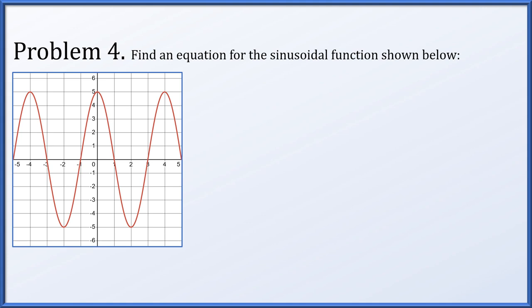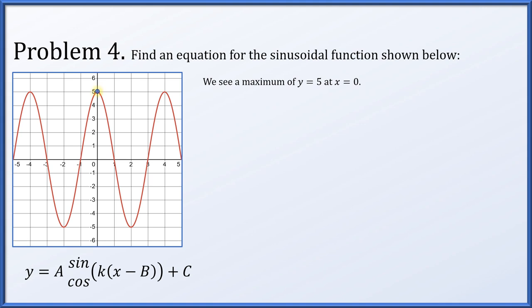Problem four: find an equation for the sinusoidal function graphed below. We look for A times cosine or sine of k(x minus b) plus c. The maximum value is y equals 5 at x equals 0, and the next maximum is at x equals 4, so the period is 4. Therefore k equals 2π divided by 4, which simplifies to π/2.